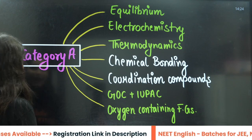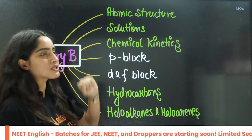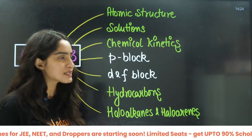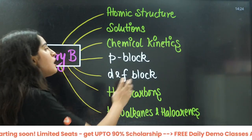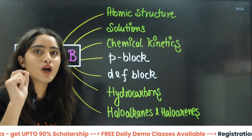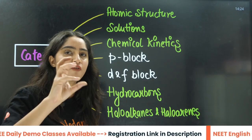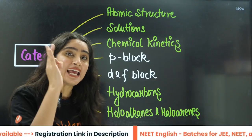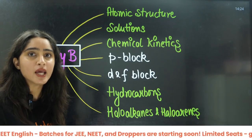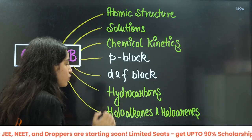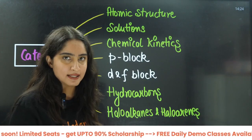Category B includes atomic structure, solutions and chemical kinetics from physical chemistry — you can expect around 2 to 3 questions from here. From inorganic chemistry, p-block chemistry — the trends, the exceptions, and some structures directly from NCERT — is very important. From organic chemistry, category B has hydrocarbons, haloalkanes and haloarenes.